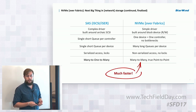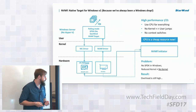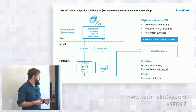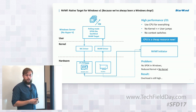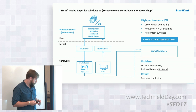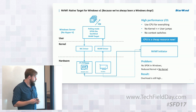NVMe is much, much faster, and to work with much faster storage you need to apply different techniques and do things differently — it's like a race car versus a regular car. It really changes things. In our first target that we did for Windows, which is a native Windows target running bare metal inside the operating system, we took some approaches and adopted them to get the maximum possible performance out of NVMe. There were several things we needed.